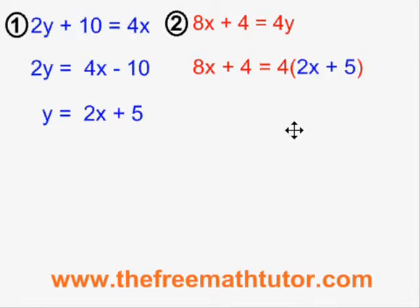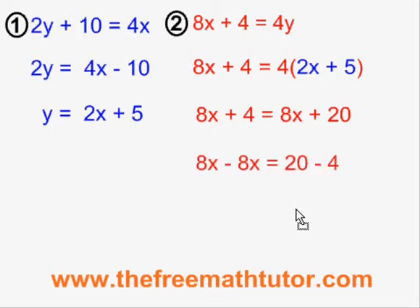Simplifying, I get 8x plus 4 equals 8x plus 20 after multiplying across the bracket. And then when I move the terms with the variable x together and move the constant terms together, I end up with 8x minus 8x equals 20 minus 4.